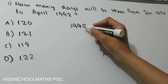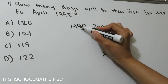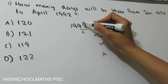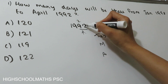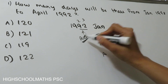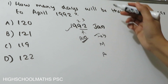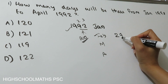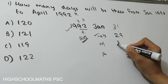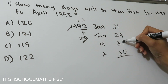For February, we need to check if 1992 is a leap year. To check: 1992 divided by 4 — since it divides evenly, 1992 is a leap year. So February has 29 days. January has 31 days, February 29 days, March 31 days, and April 30 days.